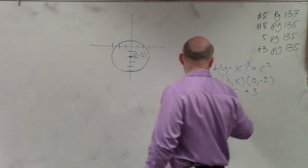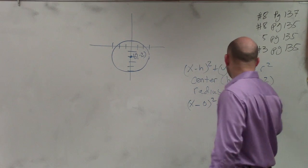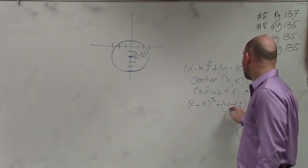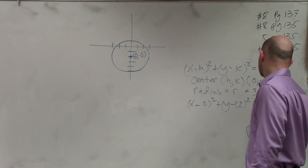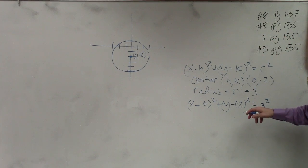So we have x minus h, which is 0, plus y minus k. Notice k is -2, so it's minus a negative. Do you guys see that? It's minus what k is, which is -2.